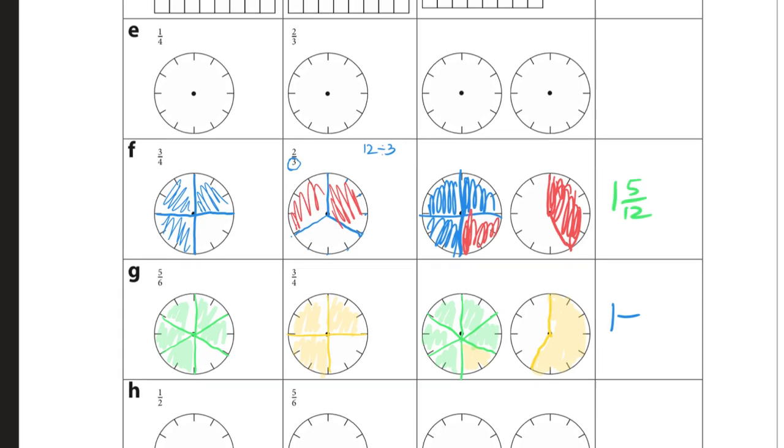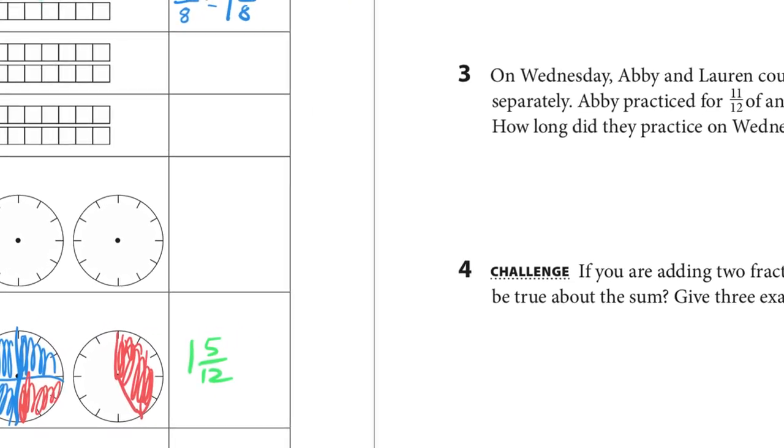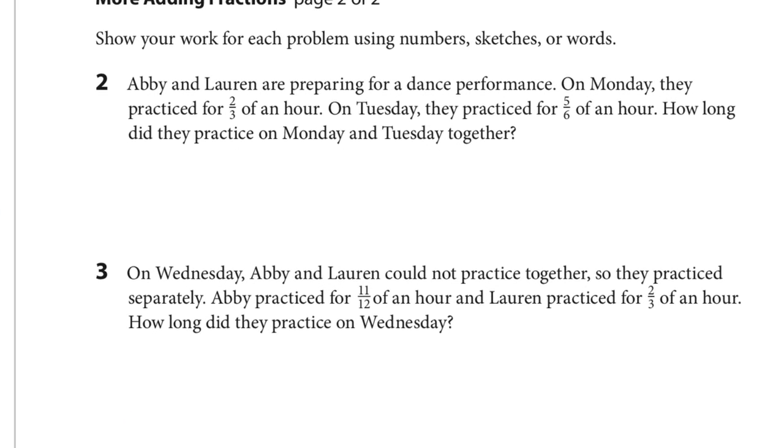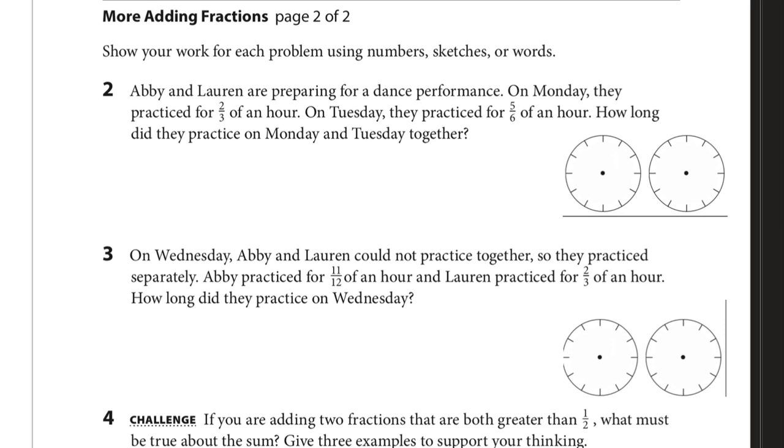So then, again, try E and H on your own, kind of using that same method we use for F and G. And now we're going to look at a couple story problems. We'll try to do these quickly. And since we've been working with clocks, I'm going to show you another way to think about these that might make it simpler for you. So Abby and Lauren are preparing for a dance. And they practice for two-thirds of an hour and also five-sixths of an hour. So how much do they practice all together? So we're adding those together. And here's your trick to think about this.